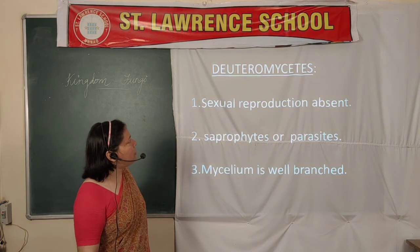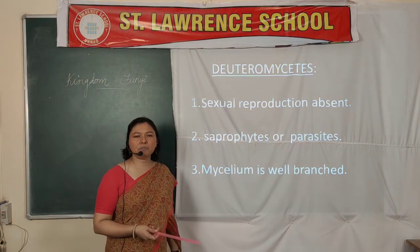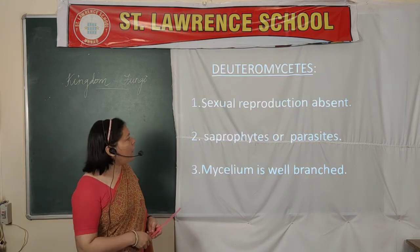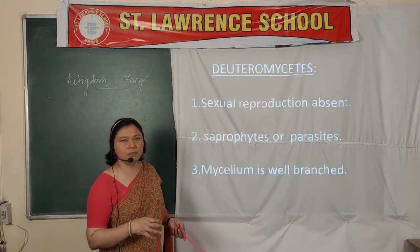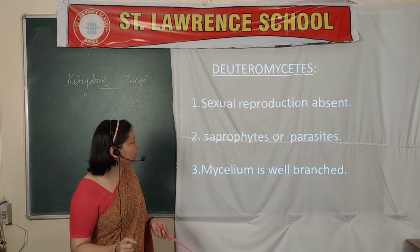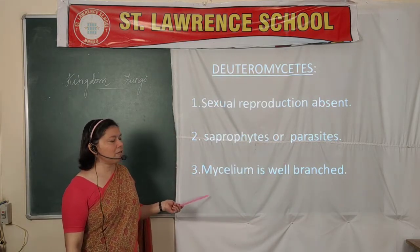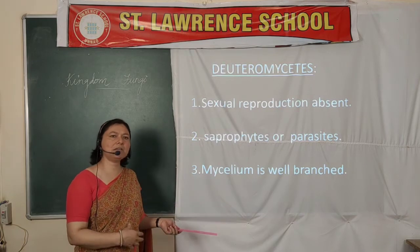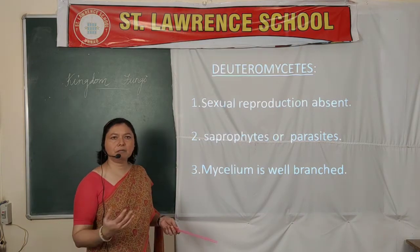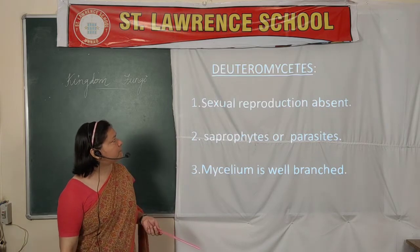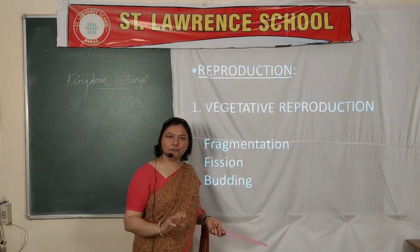Then we have Deuteromycetes. These organisms are kept in a separate group because sexual reproduction is completely absent. They are saprophytes or parasites, their mycelium is well-branched, and they possess characteristics of different classified forms. That was the end of the classification of fungi.